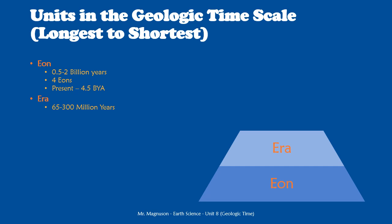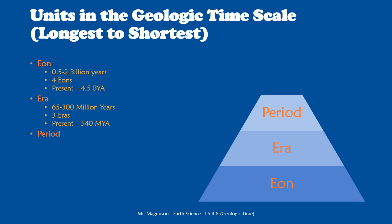Next, we have eras — the next biggest chunk. Eras are tens of millions to hundreds of millions of years long, so still very long but not billions of years. There are three eras throughout history, but they do not go back to 4.5 billion years ago. We didn't divide time that far back because we don't have enough evidence for smaller divisions that early. In fact, eras only go back about 540 million years ago, so there are three eras between 540 million years ago and right now.